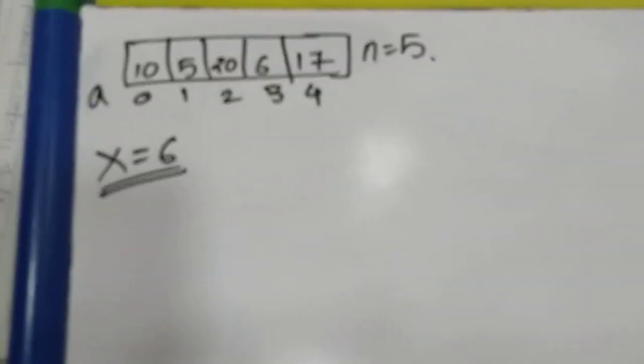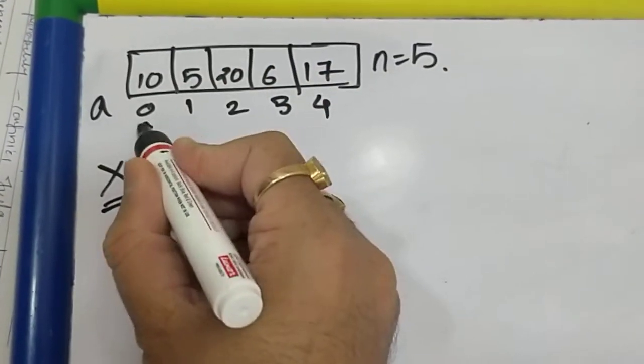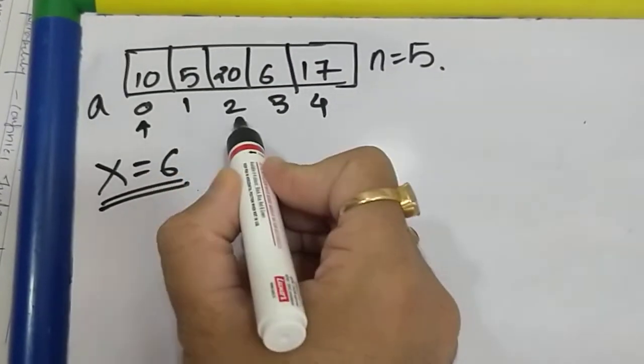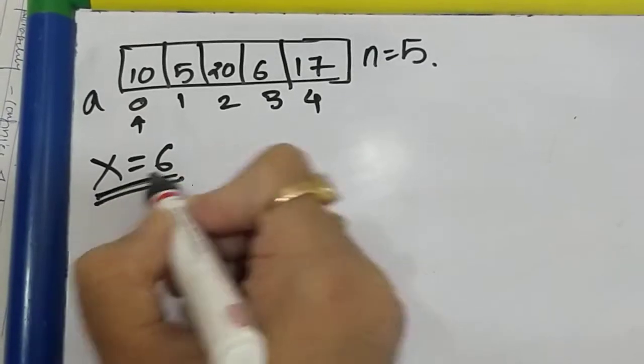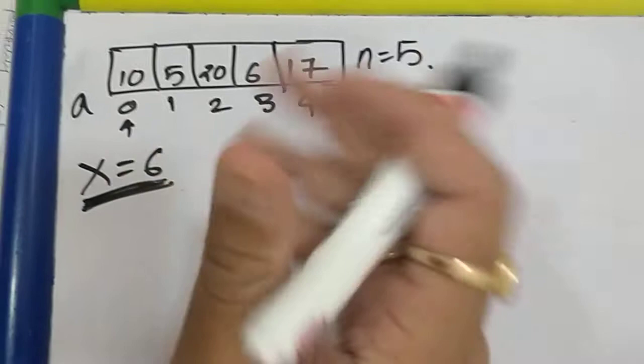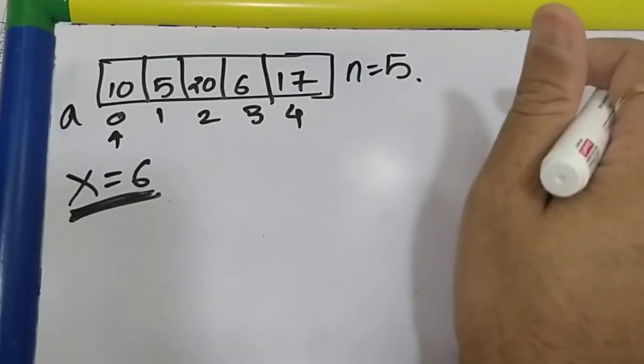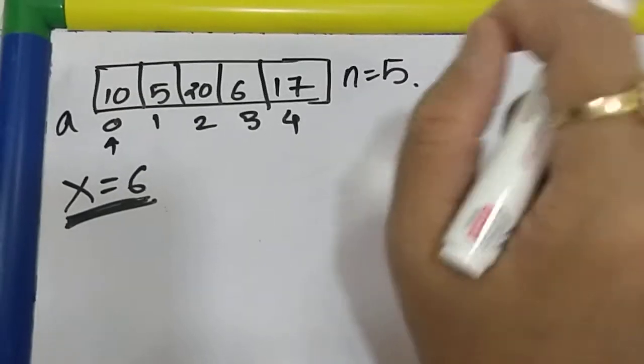Now, linear search works like this: you're going to start from the first position and then compare value x with each array element. The moment you find the element, you stop the search.